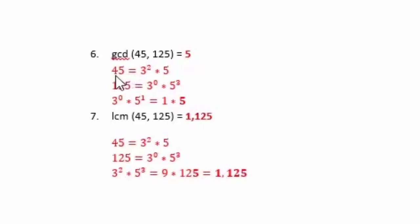So you take 45 and break it down into 9 times 5, 9 is 3 times 3, so you have 3 squared times 5 is equal to 45.